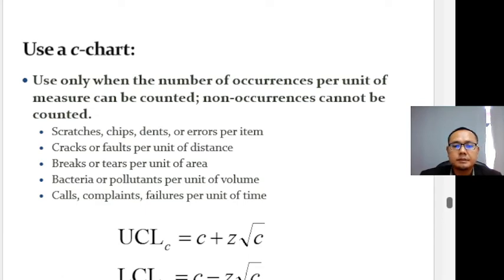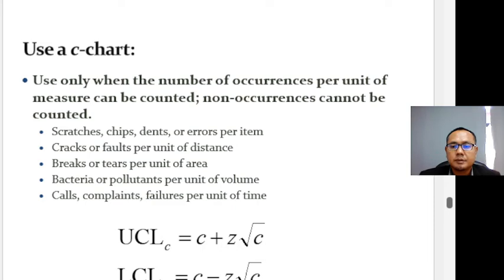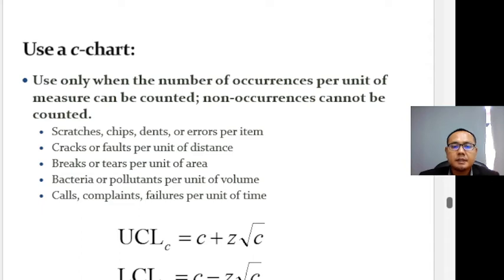The C chart applies when a unit might be an automobile, hotel room, typed page, or roll of carpet. The underlying sampling distribution is the Poisson distribution. Use of the Poisson distribution assumes that defects occur over some continuous region and that the probability of more than one defect at any particular point is negligible.